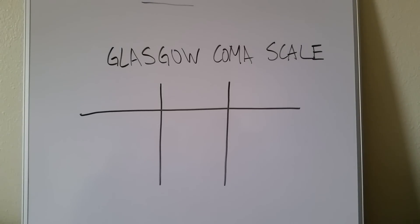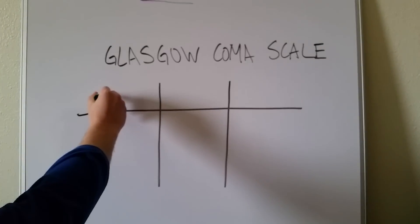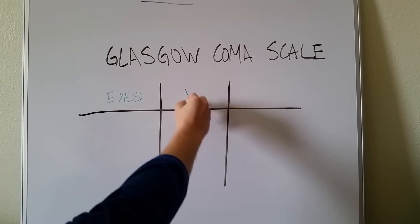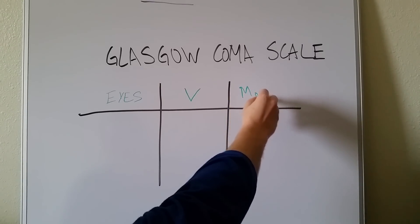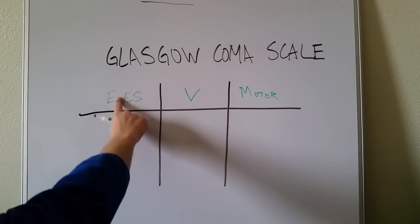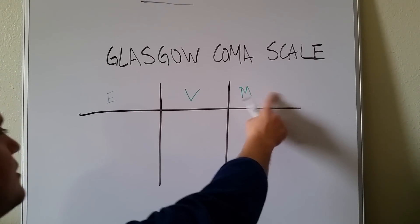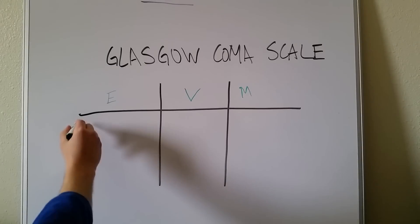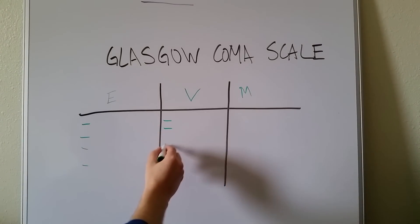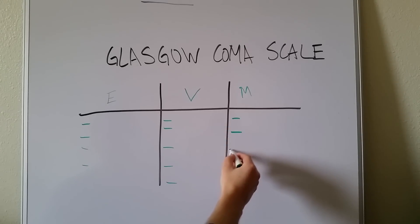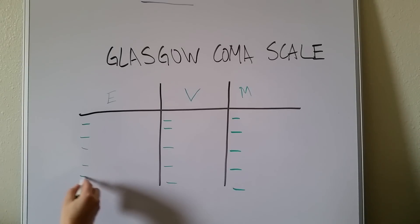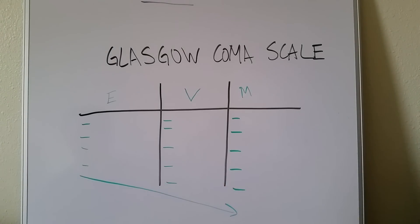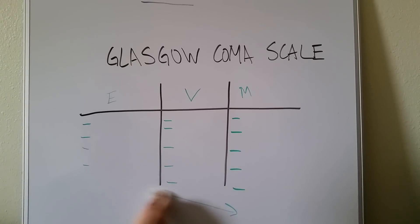The Glasgow Coma Scale is a 15-point scale with three different parts. Memorizing the three parts is the hardest thing. The first part is Eyes, then Verbal, then Motor — remember EVM. Since you have that, you just need to remember there are four different points for Eyes, five for Verbal, and six for Motor. That gives you a nice stair-step progression: four, five, six points awarded for EVM.